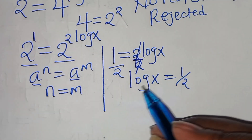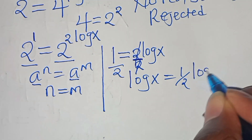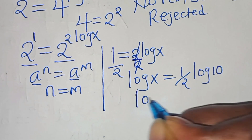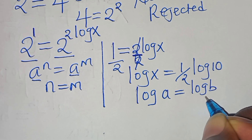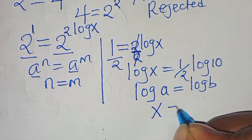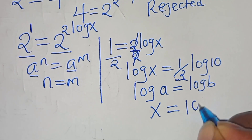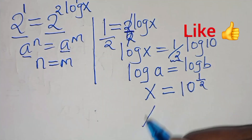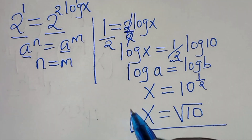This is log base 10, so log₁₀ x equals one-half means x equals 10 to the power of one-half. Therefore x equals the square root of 10.